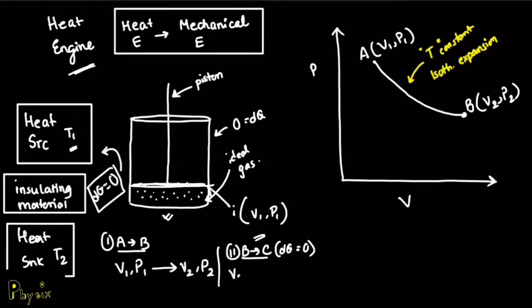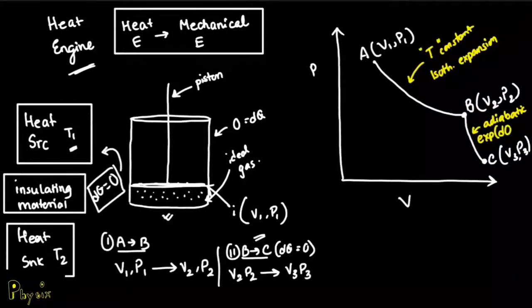Since DQ is 0, and it goes from state V2, P2 to an expanded state of V3, P3, we can say that an adiabatic expansion has taken place. We know that an adiabatic curve is steeper than an isothermal curve, and thus it will look kind of like this. An adiabatic expansion has taken place where DQ is basically 0.